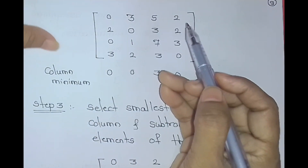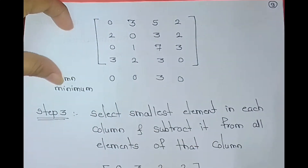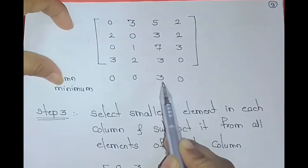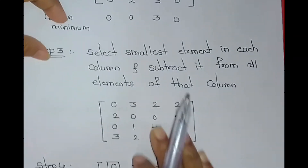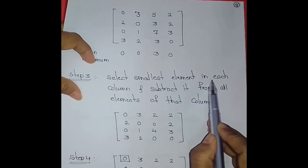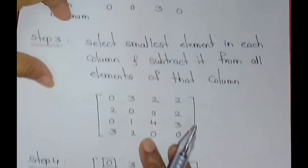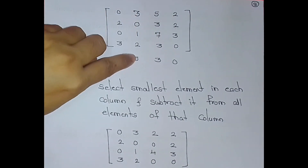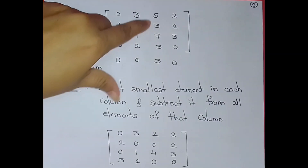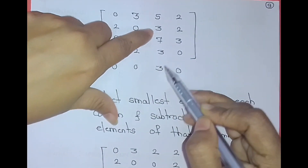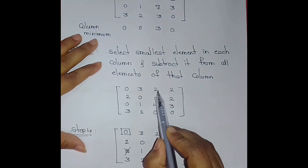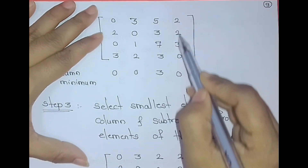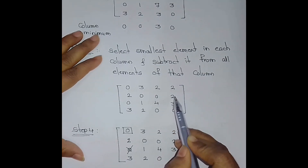Step 3: column reduction — we find the minimum value for each column and subtract it from all elements of that column. The minimum value of the first column is 0, second column is 0. For the third column: 5-3, 3-3, 7-3, 3-3, giving new values 2, 0, 4, 0. The fourth column minimum is 0, as it is. The resulting reduced matrix values are: 2, 0, 4, 0 for one column; 2, 2, 3, 0 for another.